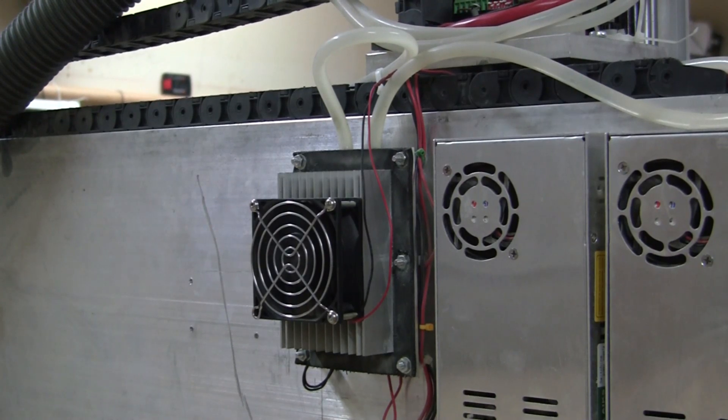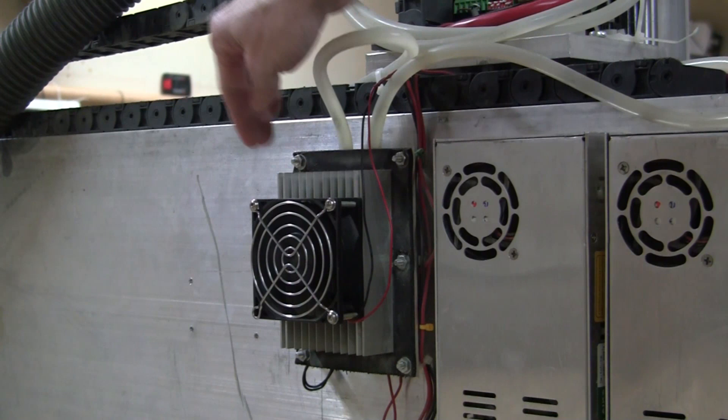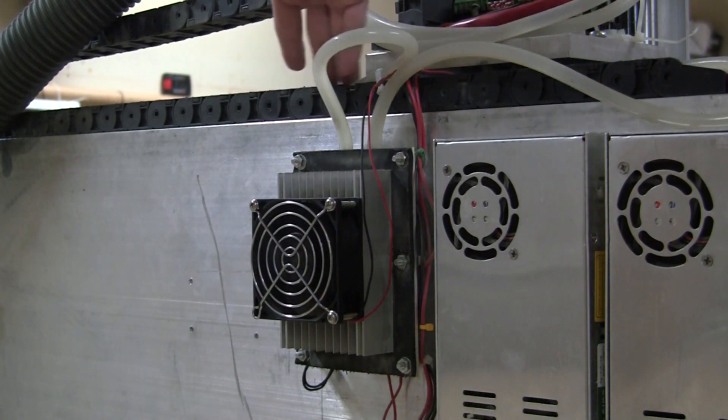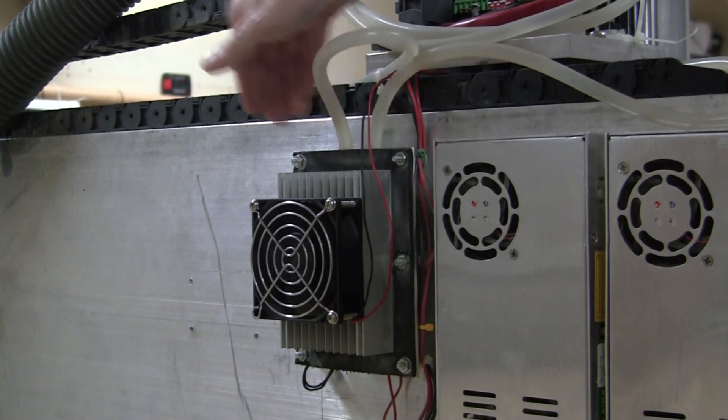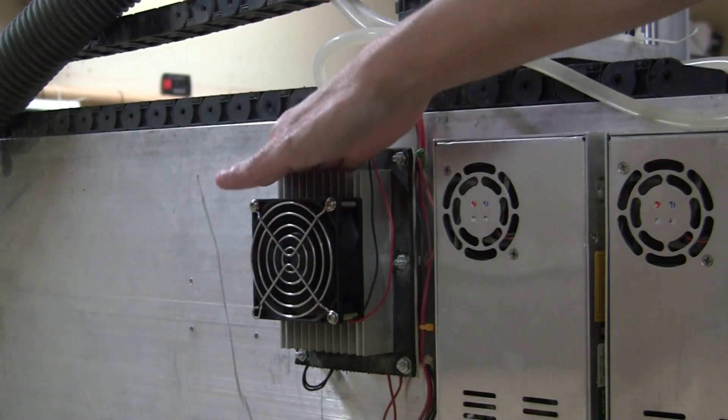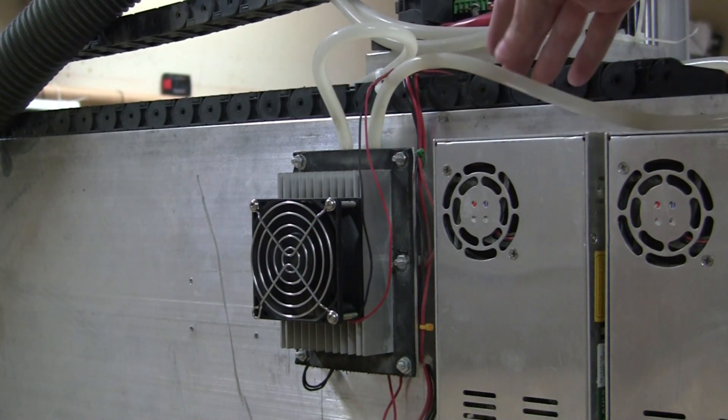So you've just seen the water pumping part of the cooling system. This is the actual cooling system here where we have the hose coming from the spindle going into the cooling. There's a heat sink and a fan that cools the heat sink, and then you have the water coming out from the heat sink back to the pump or the pump reservoir.